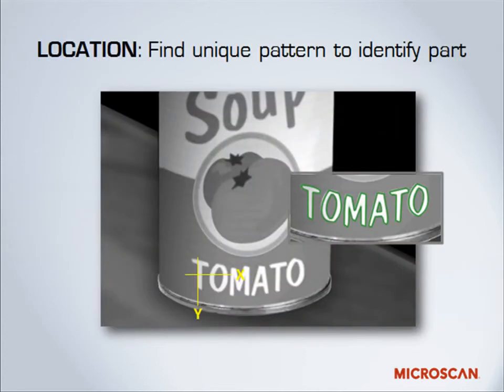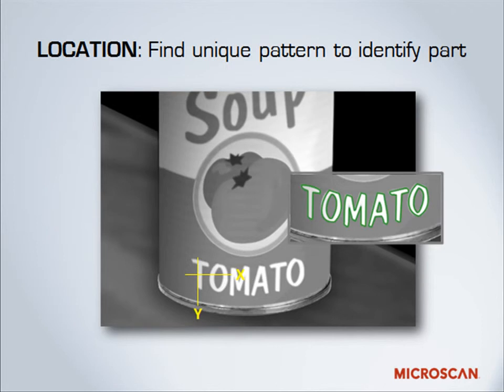Additionally, you can find a unique pattern and use that to identify a part. An example you can see here is a can of soup. The vision system has been trained to look for a pattern on the soup — in this case, the portion of the label that says 'tomato' on it. We can use that pattern to verify that we do, in fact, have the right soup going down the line.